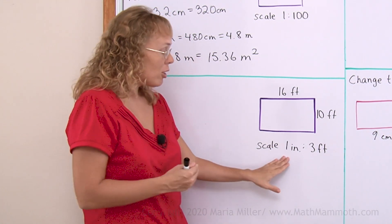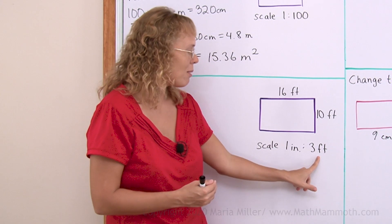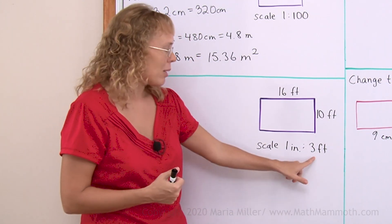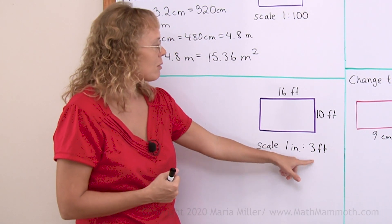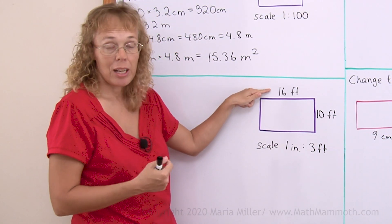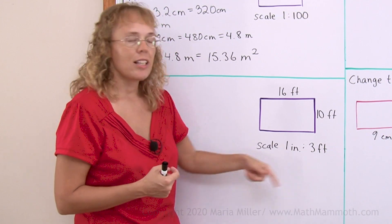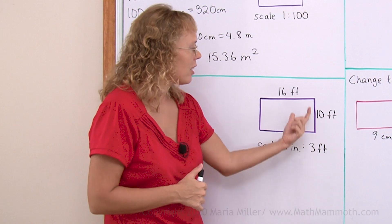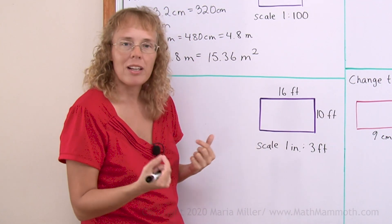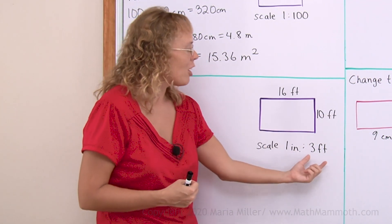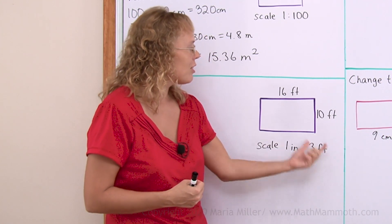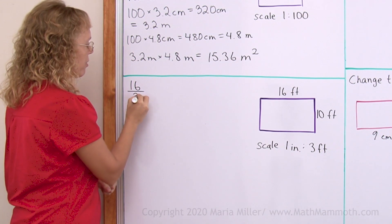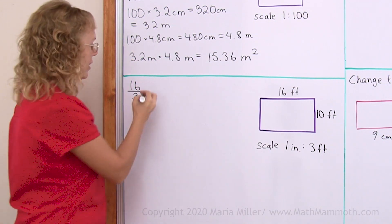And whenever your scale is 1 to something, 1 to some number, then you simply either multiply or divide by this other number. You can think of it this way: each 3 feet here will correspond to 1 inch on paper. So we need to find out how many times 3 feet fits into 16 feet. So I'll calculate 16 divided by 3 and your answer will be in inches.